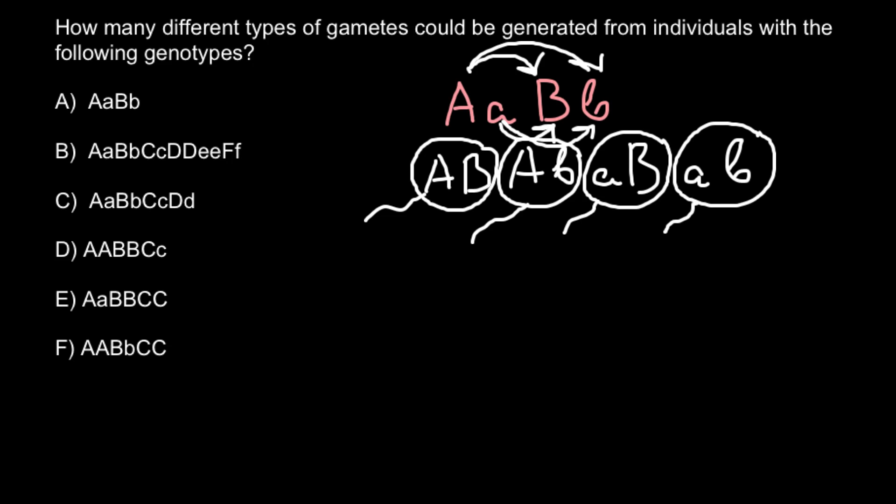Because here we have diploid organism, we would use two because we have two alleles for each gene and two raised n. So n here stands for the number of genes that is in the heterozygous state.